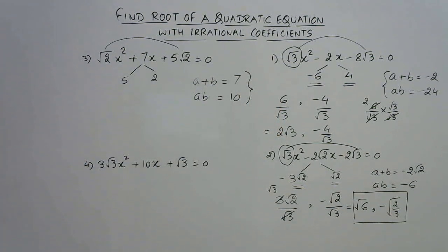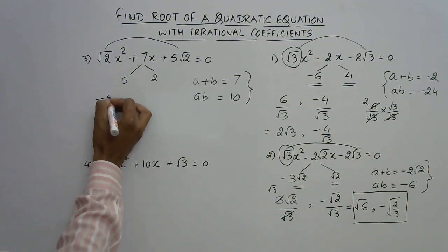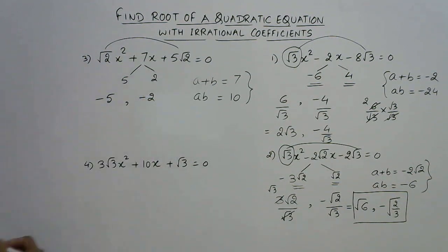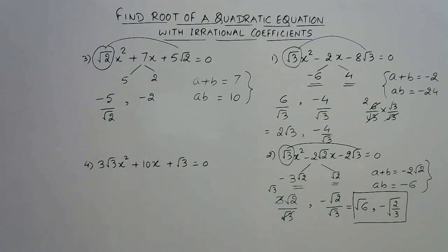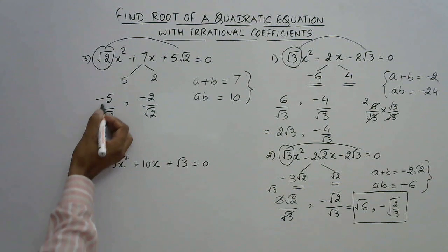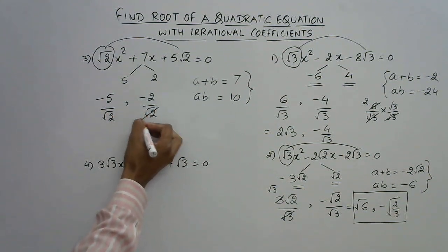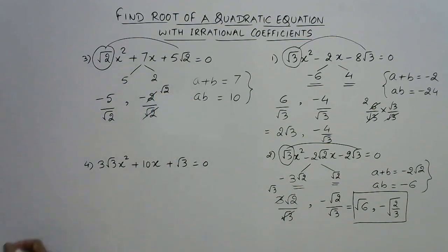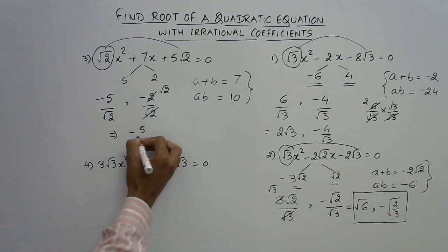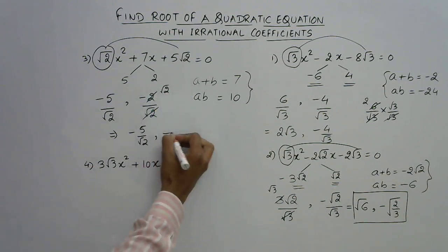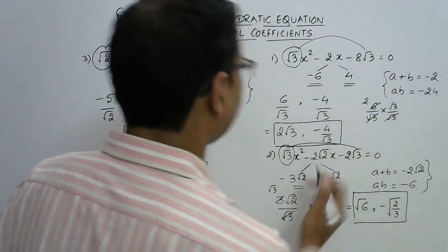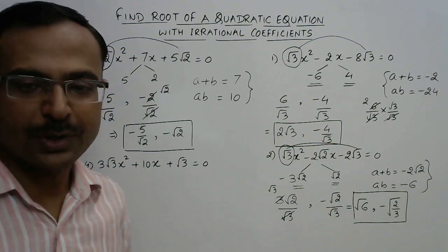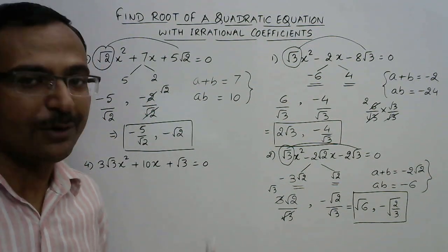After applying this rule, I have found the middle term split factors. Now change the sign: one becomes -5 and the other becomes -2. Divide by the coefficient of x², which is √2. So -5/√2 stays as is, and for the other, √2 cancels with 2 giving -√2. The answers are -5/√2 and -√2. Very simple method — practice with 20 such questions for half an hour and you will be comfortable.